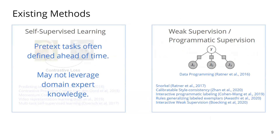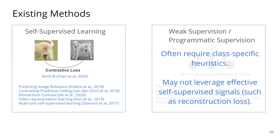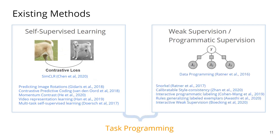While self-supervised models learn an effective representation, the pretext tasks used are often defined ahead of time and may not leverage domain expert knowledge during training. On the other hand, programmatic supervision often requires class-specific heuristics, which may be difficult to construct for complex behavior. Also, these models may not leverage effective self-supervised signals. We propose to unite the two frameworks through task programming, using self-supervision and programmatic supervision to learn data-efficient representations.